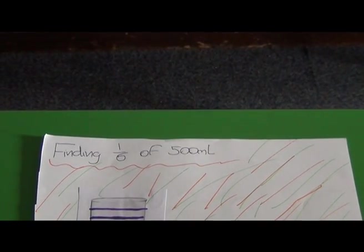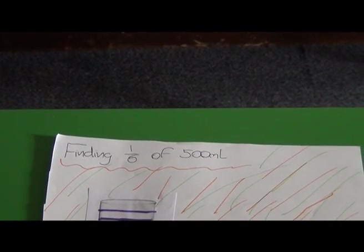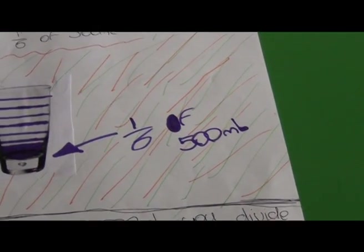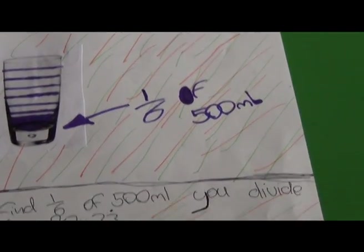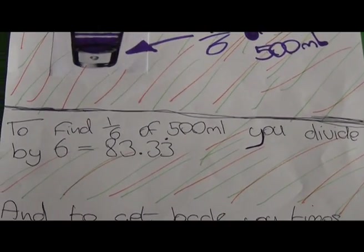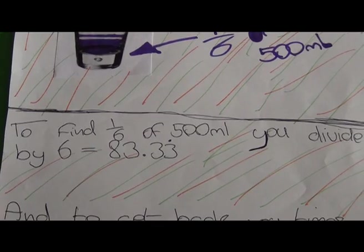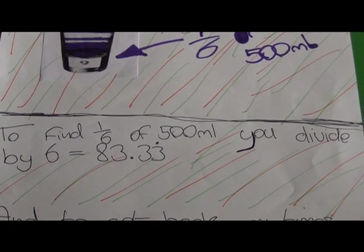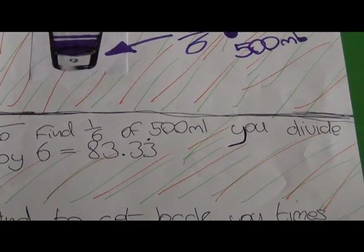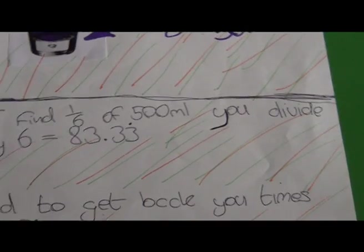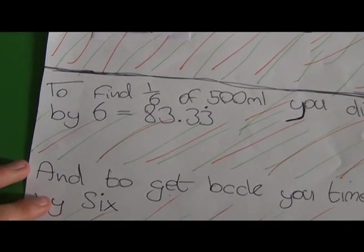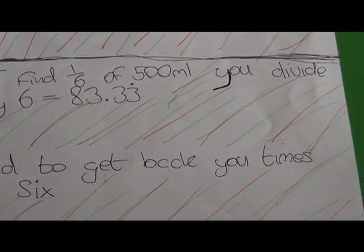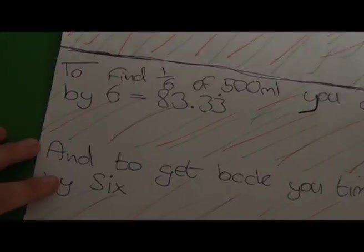Finding one-sixth of 500ml. To find one-sixth of 500ml, you divide by six. It equals 83.33 recurring. And to get back, you times by six.